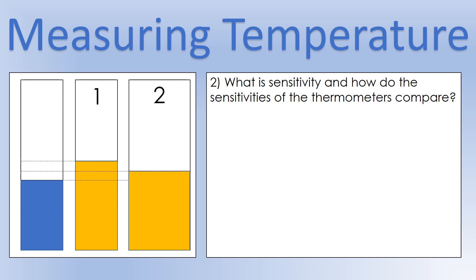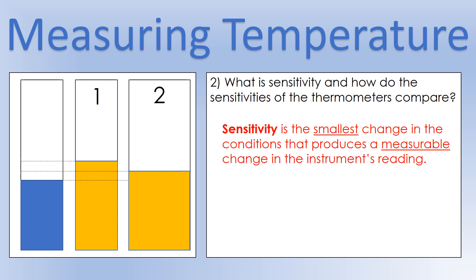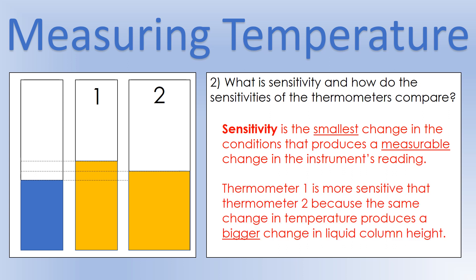Next one, we're going to look at what sensitivity is and look at comparing the sensitivities of the two thermometers on the diagram that you can see. So first of all, sensitivity is the smallest change in conditions that produces a measurable change in the instrument's reading. So let's imagine both thermometers started at the level you can see on the left in blue. And then we change them so both one and two are at the same temperature, but slightly increased from the starting one. So we described thermometer one as being more sensitive because the same change in temperature produced a bigger change in the column height. So there's a bigger measurable change for the same change in conditions. So one is more sensitive, which could be a good thing depending on your application.